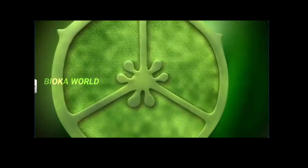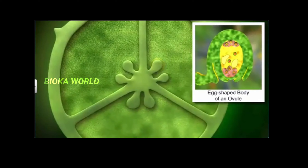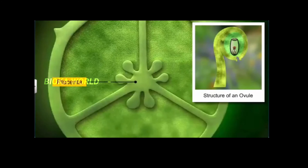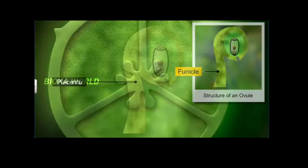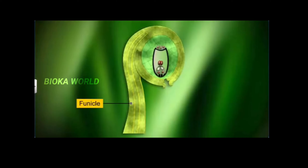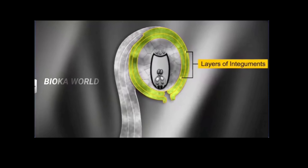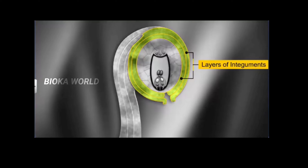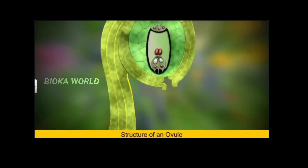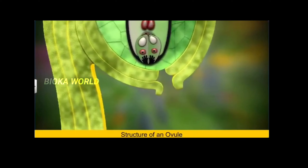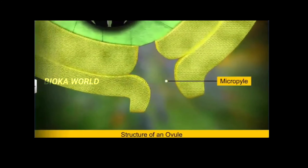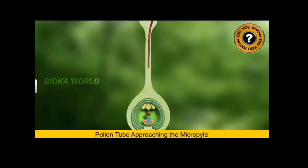The ovule, considered by botanists as the forerunner of the seed, has an oval and egg-shaped body. It remains attached to the placenta by a stalk called the funicle. The ovule's body fuses with the funicle in a region called the hilum. The ovule is well protected with one or two protective coverings called integuments, which later form the seed coat. The integuments cover the entire ovule except at the apex, where they form a narrow opening called the micropyle. The micropyle acts as an entry point for the pollen tube during the process of fertilization.